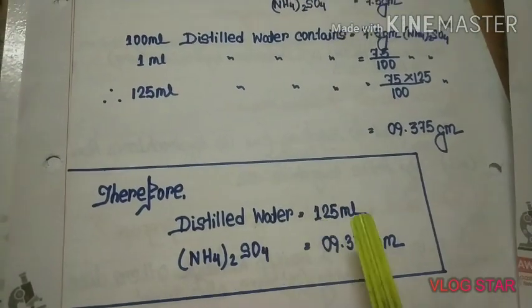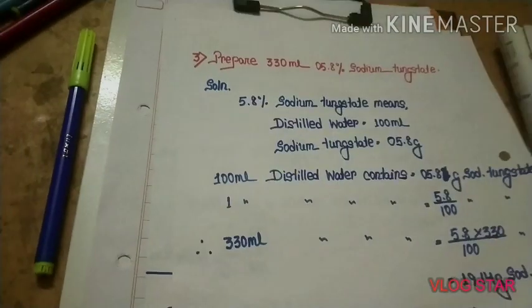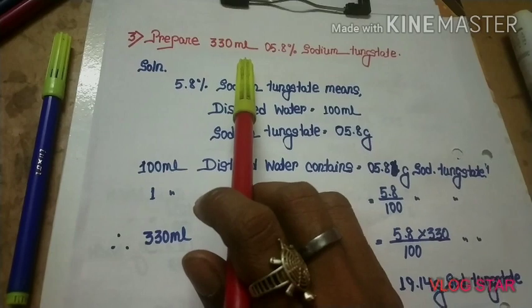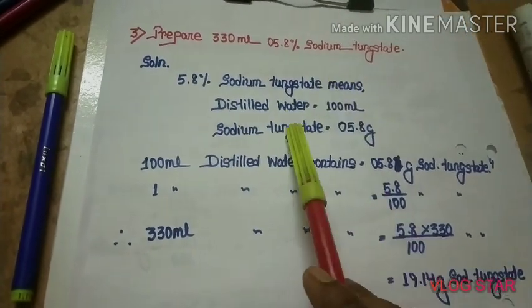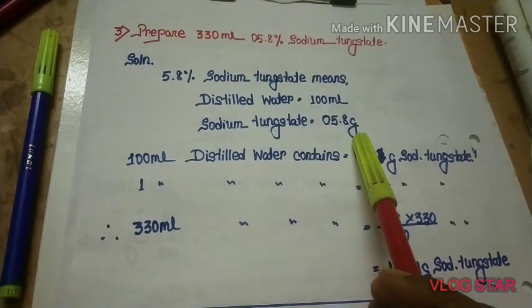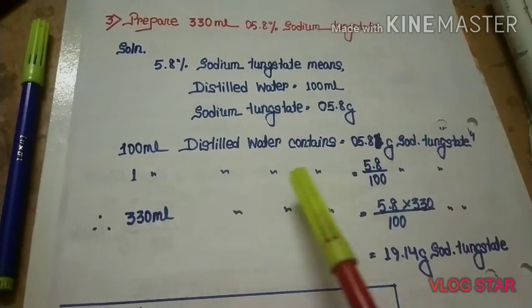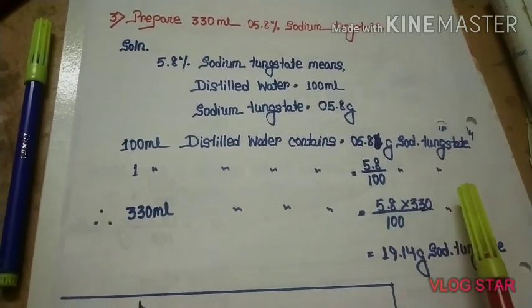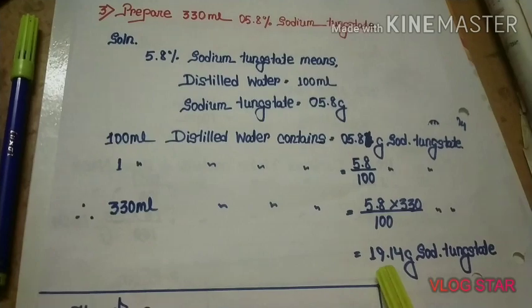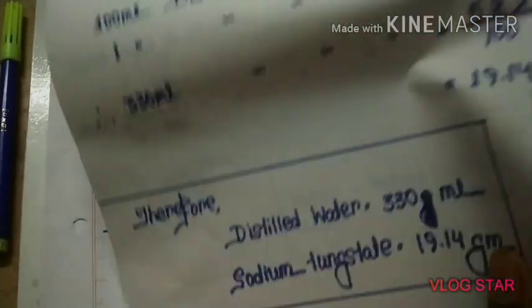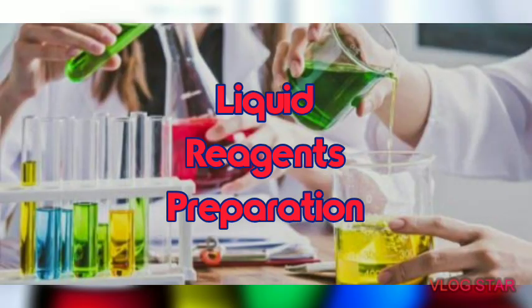Now prepare 330 ml of 5.8% sodium tungstate. 5.8% sodium tungstate means 100 ml distilled water contains 5.8 grams sodium tungstate. 330 ml distilled water contains (5.8 × 330)/100 = 19.14 grams sodium tungstate. Therefore: distilled water = 330 ml, sodium tungstate = 19.14 grams.